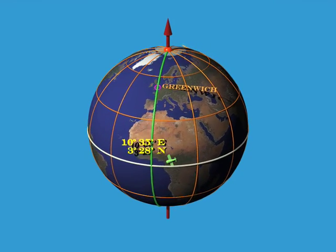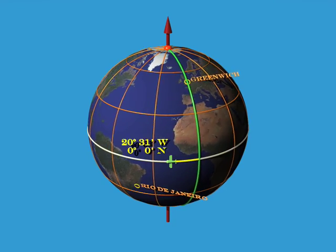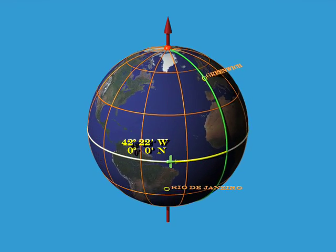Since we need two numbers to specify a location on the surface of the Earth, we say that the sphere is two-dimensional, and mathematicians often call it S2.